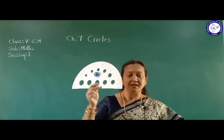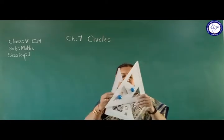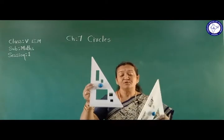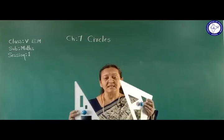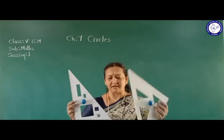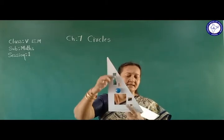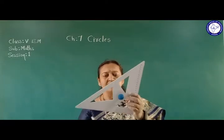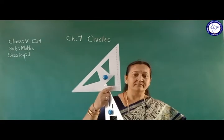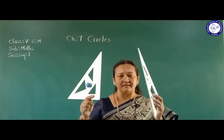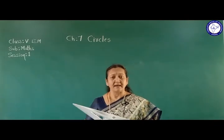Then come two triangular objects called set squares. These are helpful to construct right-angled triangles and to draw parallel lines - in higher classes you will learn more about how set squares are used. Both are different: one has 90°, 60°, and 30° angles, and the other has 90° and two angles of 45° each. So these help us to construct right-angle triangles and draw parallel lines.